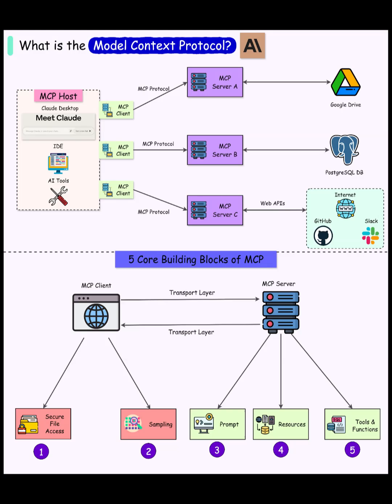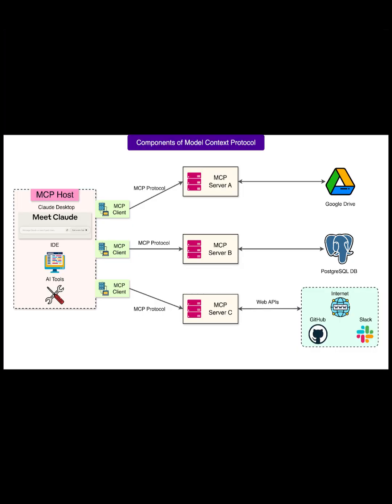Spec and Implementations. MCP is both a formal specification and working code. The spec defines how messages, capabilities, and transports should behave, while open-source SDKs and reference servers give production-ready building blocks. Out of the box, developers get libraries for popular languages, plus example servers that connect to services like GitHub, Slack, and PostgreSQL. The open model mirrors how HTTP standardized the web — no single vendor lock-in, easy contribution and rapid adoption.